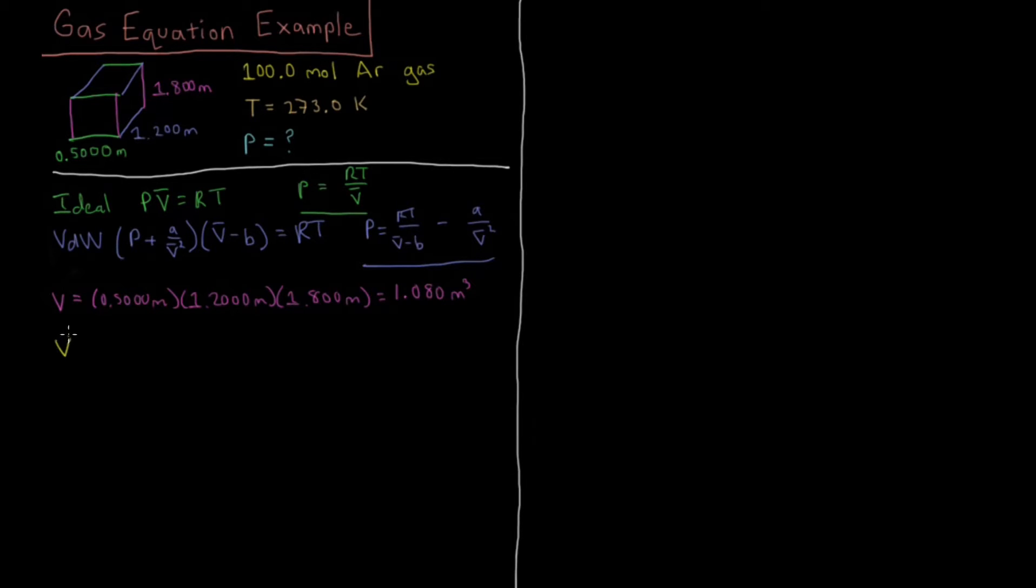Inside this volume there's 100 moles of gas. So our molar volume V̄ is just V over N, which is 1.080 meters cubed over 100 moles. With four sig figs on each, that gives us 0.01080 meters cubed per mole. That's the molar volume, or you can think of that as the density of the gas.